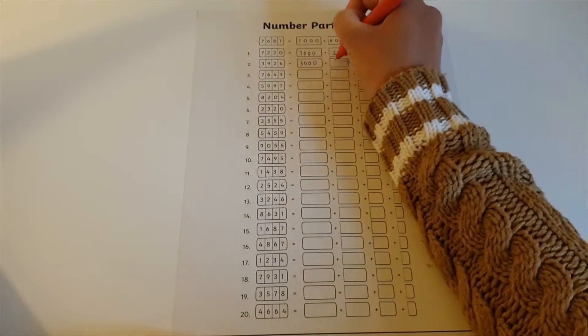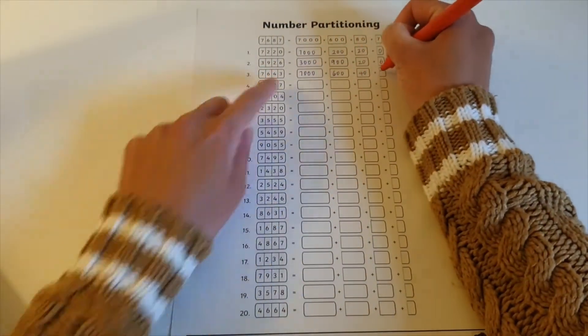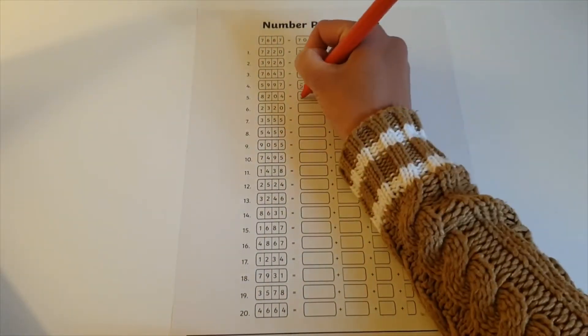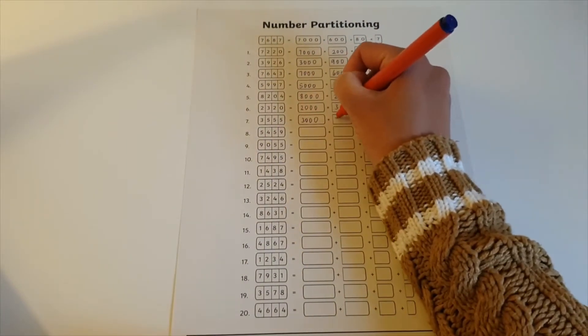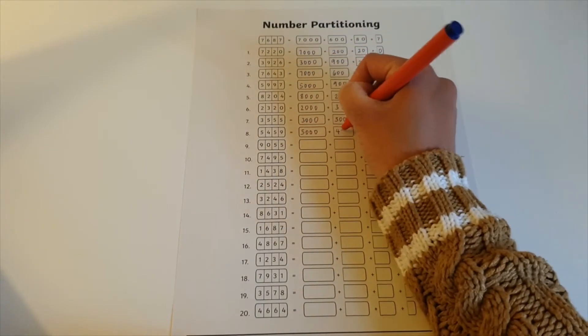These worksheets have been designed for children to use simply. Children must separate three, four, and five digit numbers into the following: tens of thousands, thousands, hundreds, tens, and ones.